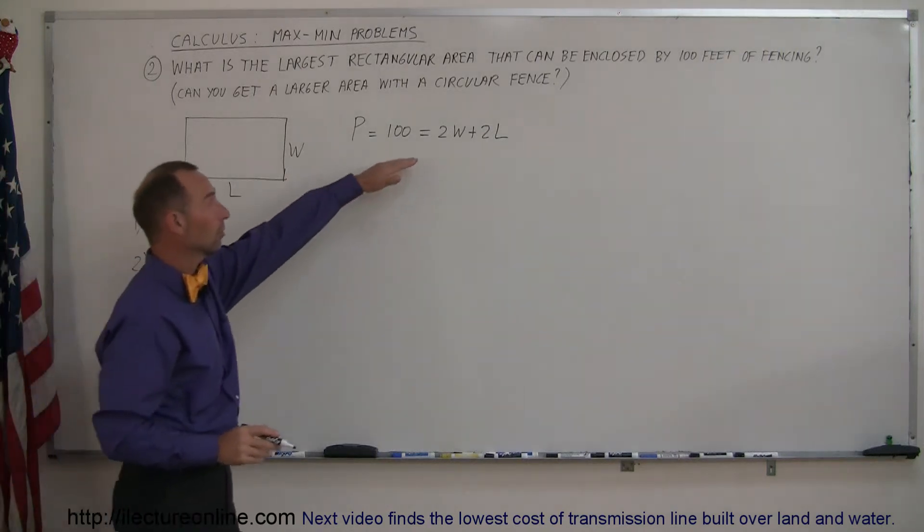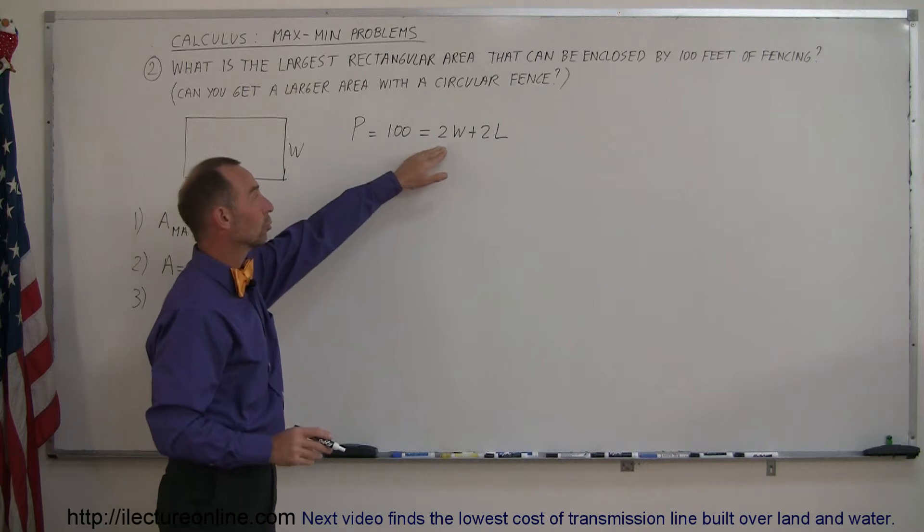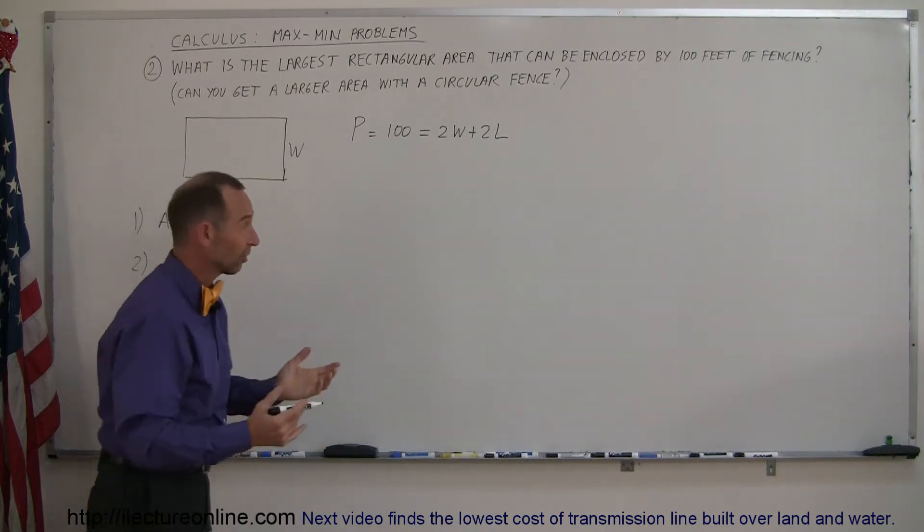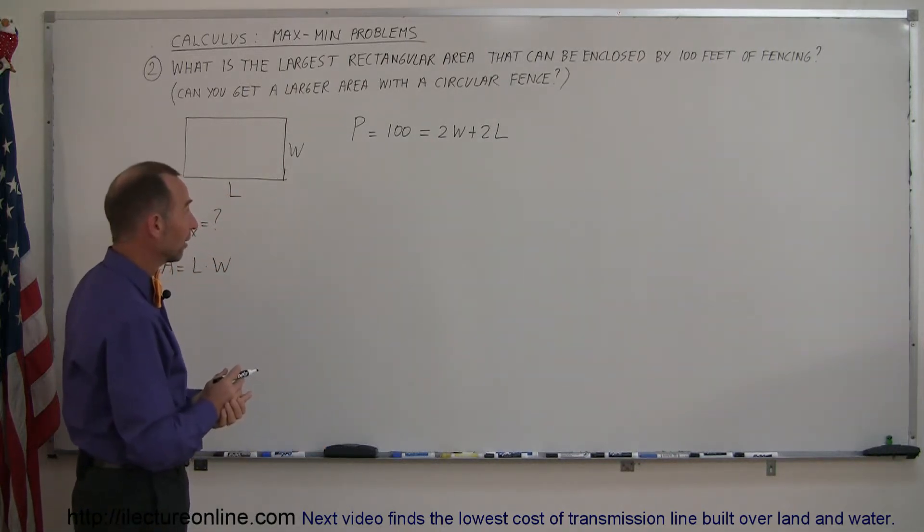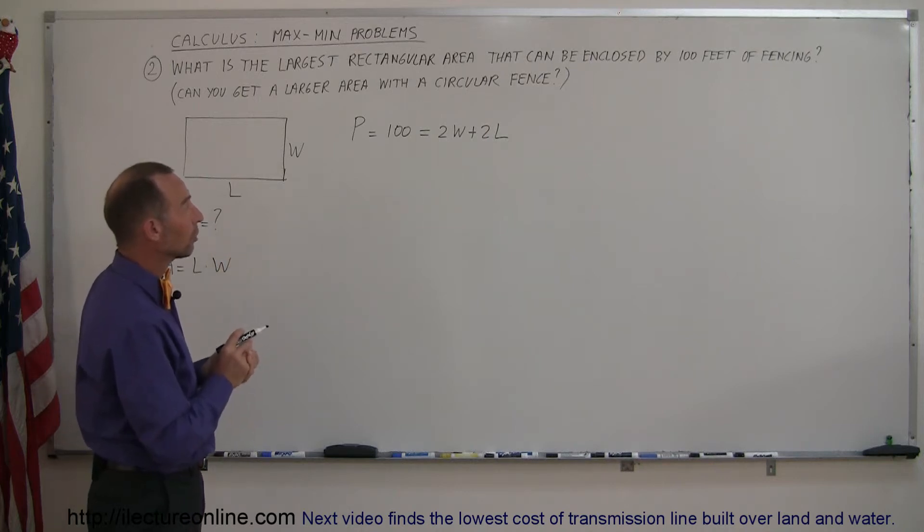we're going to find a constraint, and here it is, that 100 must equal two times the width plus two times the length, because that's all the fencing you've got. So let's equate that equation for one of the variables in terms of the other.